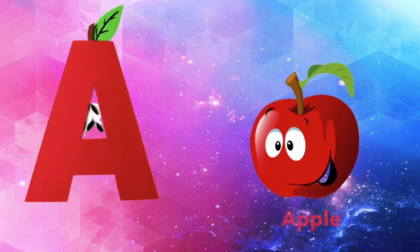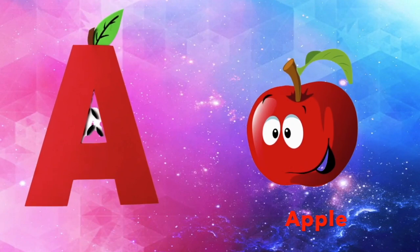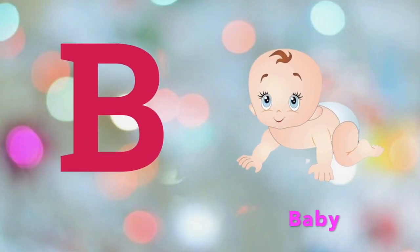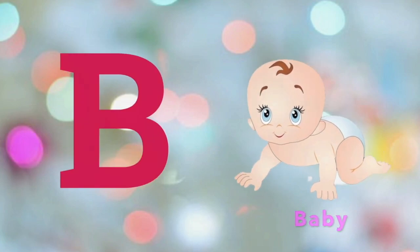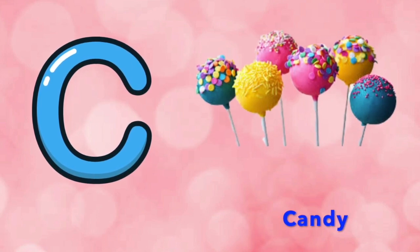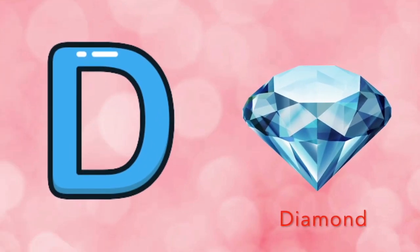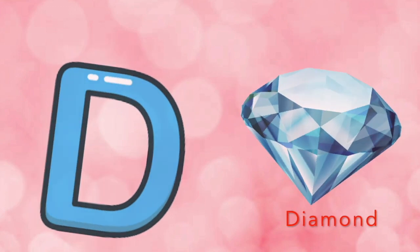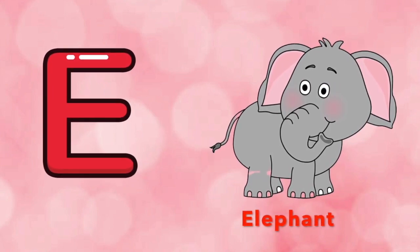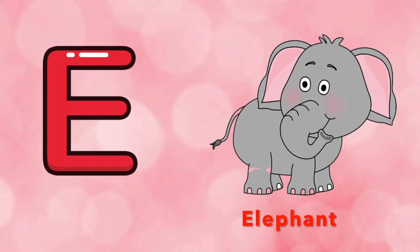A is for Apple. A-A-Apple, A-Apple. B is for Baby. B-B-Baby, B-Baby. C is for Candy. C-C-Candy, C-Candy. D is for Diamond. D-D-Diamond, D-Diamond. E is for Elephant. E-E-Elephant, E-Elephant.